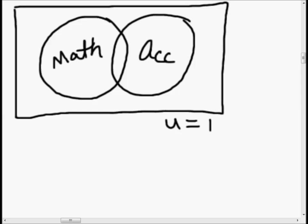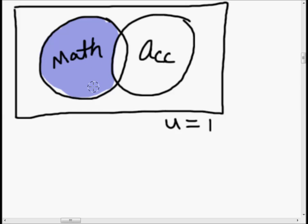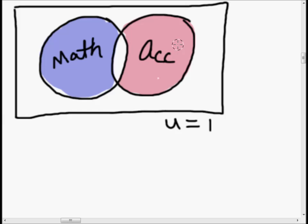Let's do some color coding and make some plans. For math, I'm going to color it blue. For accounting, we're going to do a nice red. And for both — the overlap in the middle — we're going to do purple. This might seem a little silly, but once you see what I'm doing, I'm hoping it will make some sense. Let's go ahead and label everything on our Venn diagram.